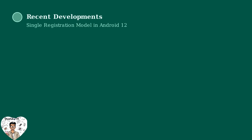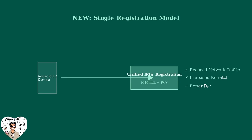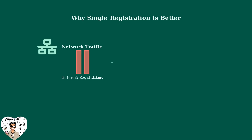Android 12 introduced a significant improvement to IMS with the single registration model, making mobile communications more efficient and reliable. Before this, Android devices had to register separately for MMTEL and RCS services — two different IMS registrations happening simultaneously. The new single registration model in Android 12 changed everything: now both MMTEL and RCS services are managed through just one IMS registration. This single registration approach brings three major benefits.